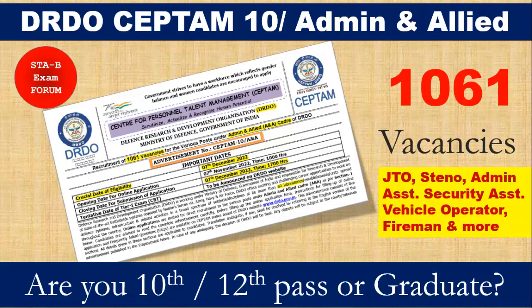Welcome to STAB Exam Forum. DRDO will soon release 1061 vacancies in the Admin Allied cadre. In this cadre, there are different posts like Junior Translation Officer, Steno, Admin Assistant, Security Assistant, Vehicle Operator, Fireman, and many more. This is a very good opportunity for candidates who are 10th pass or 12th pass or graduates.